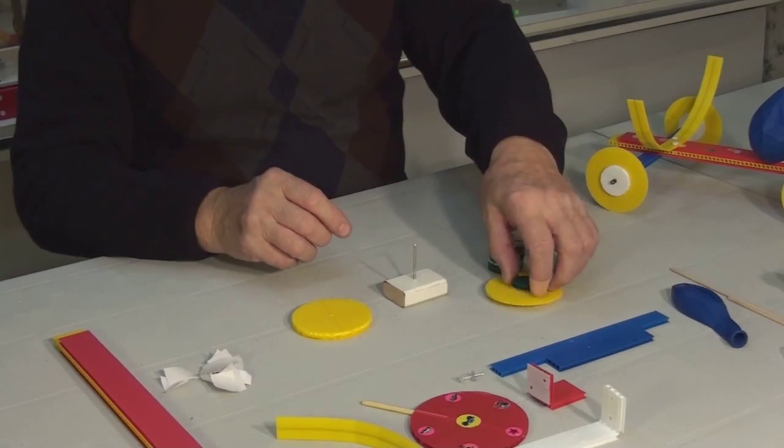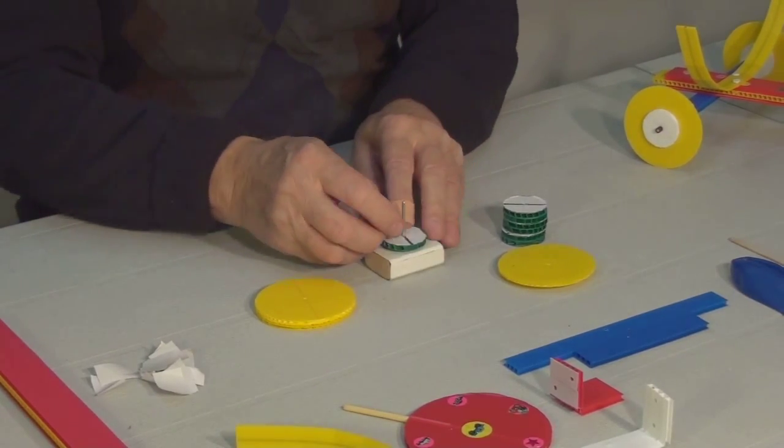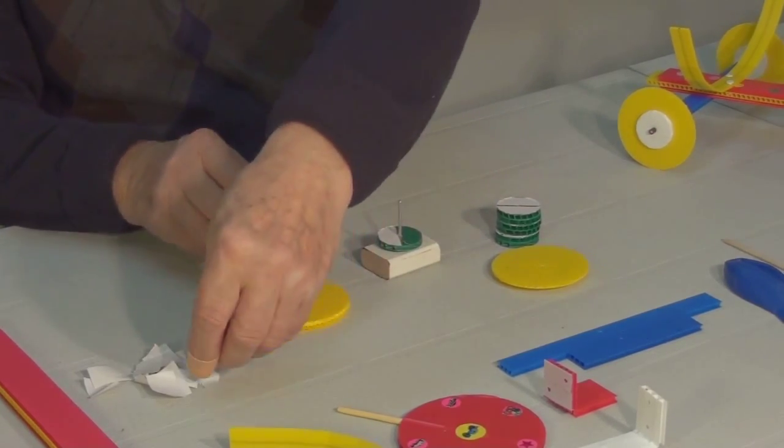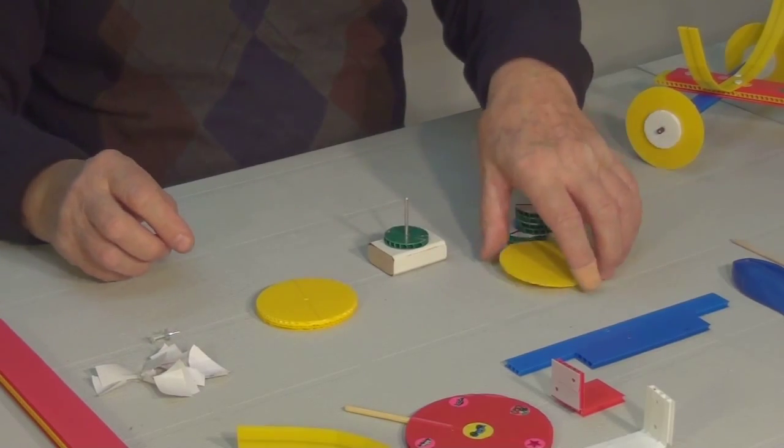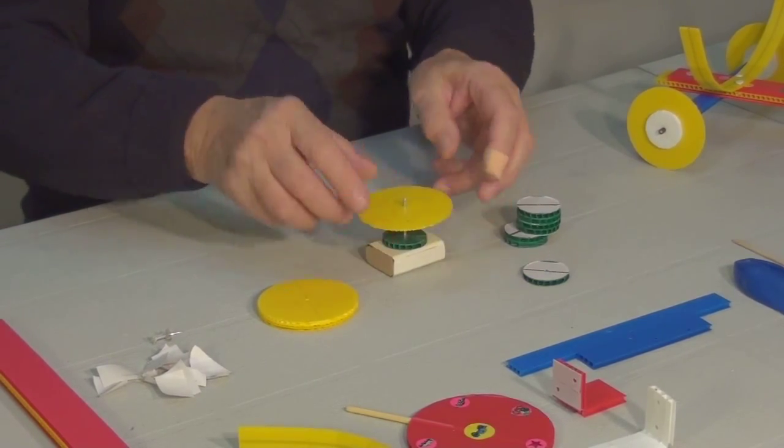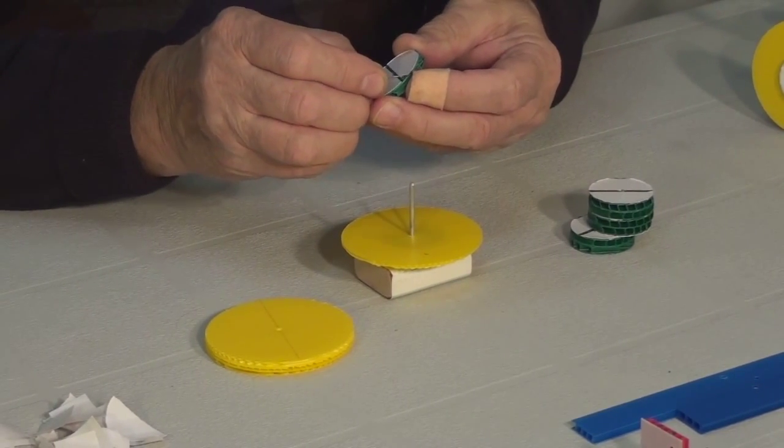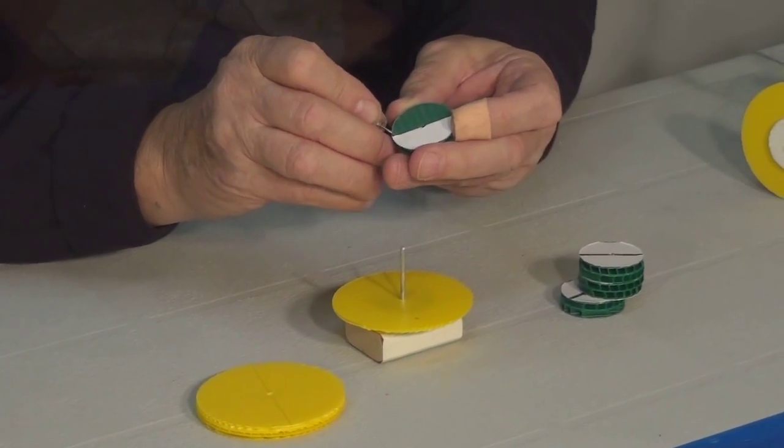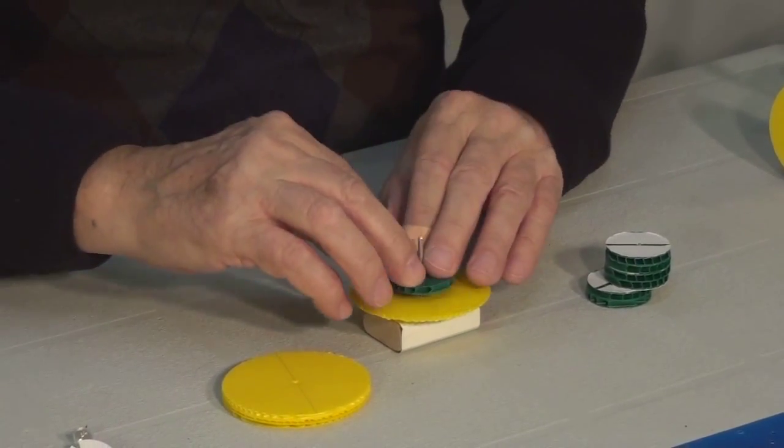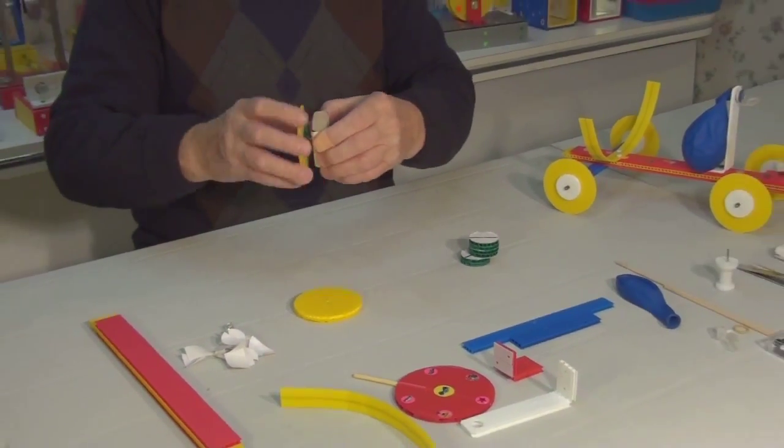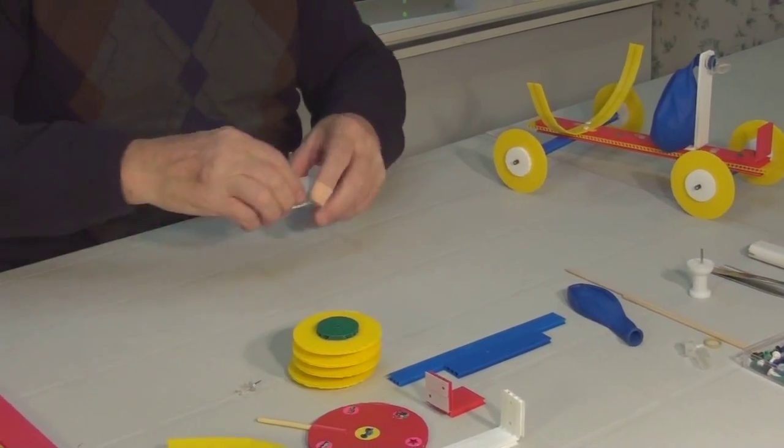To help us assemble, we will use this simple device. First, take one hub and place it on the pin, adhesive side up. Remove the adhesive backing. Place the large disc on top. Press down. Remove adhesive backing from the second hub and place it on the pin over the larger disc, adhesive side down. Press firmly. Now we can remove the finished wheel from the pin. The other three wheels are assembled the same way.